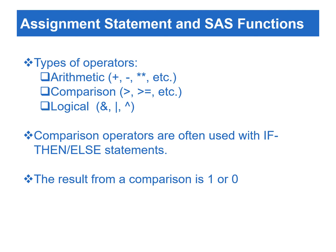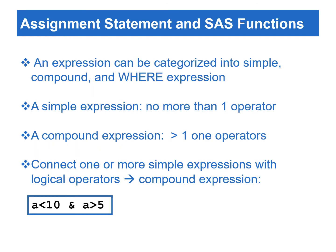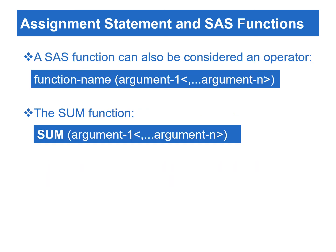There are three types of operators: arithmetic, comparison, and logical operators. Comparison operators are often used with if-then/else statements. The use of comparison operators is for comparison or calculation purposes between two variables, constants, or expressions. If the comparison is true, the result is returned with one; otherwise, the result is returned with zero. An expression can be categorized into simple, compound, and where expressions. A simple expression can contain no more than one operator, while a compound expression can contain more than one. We can connect one or more simple expressions with logical operators to form a compound expression. A SAS function can also be considered an operator, since a function performs a certain type of calculation and returns a value.